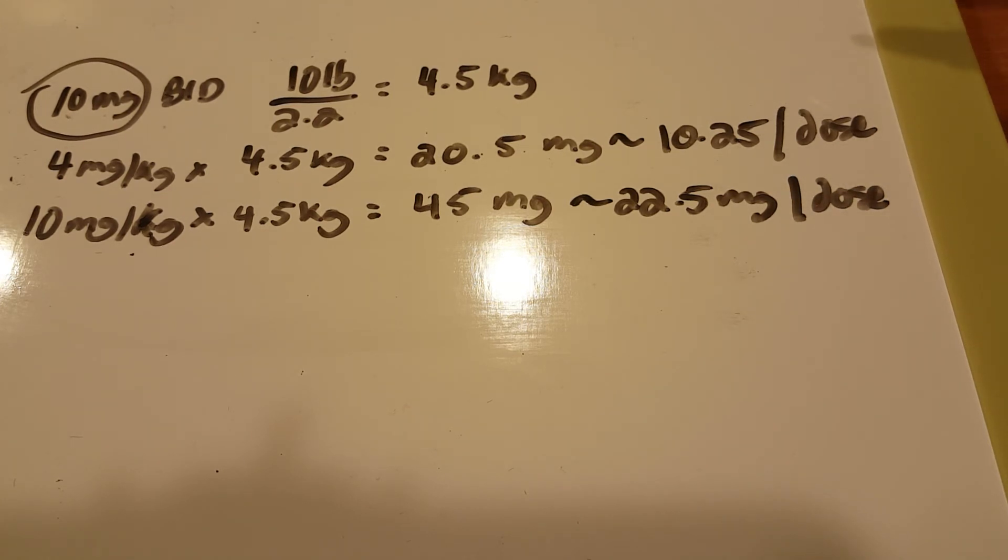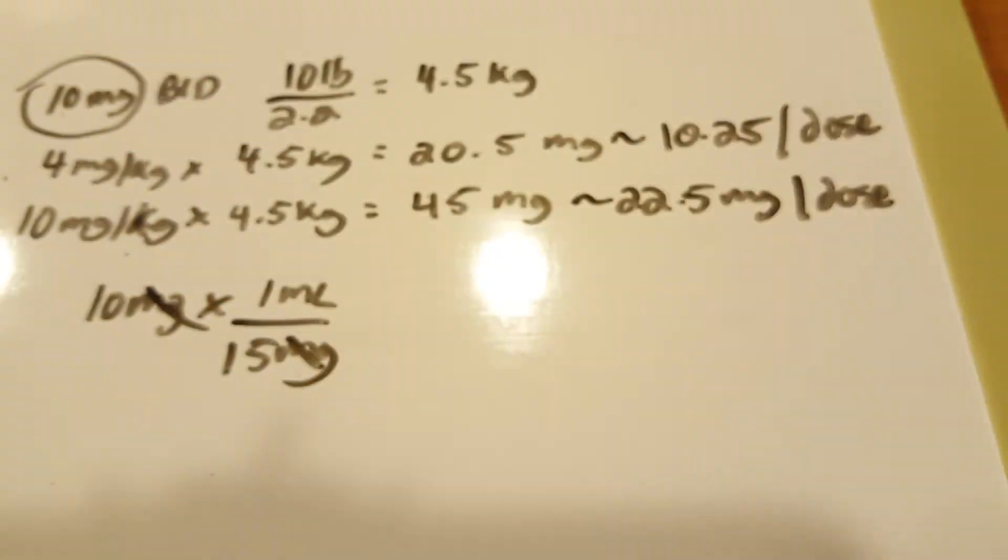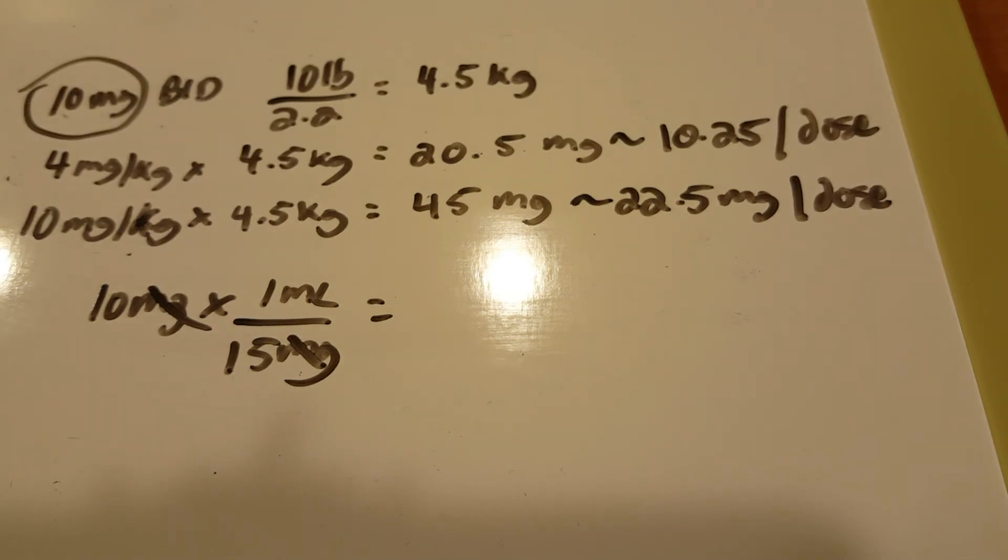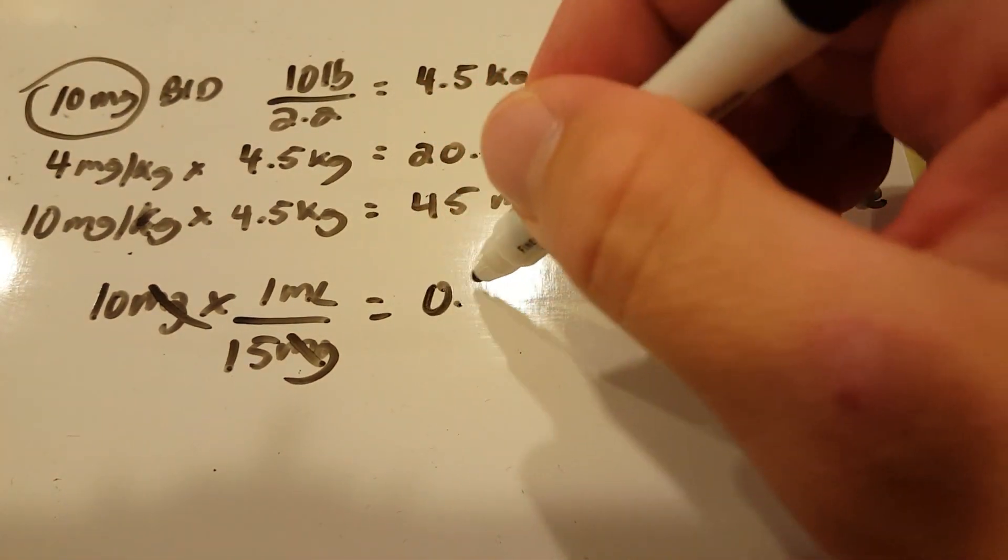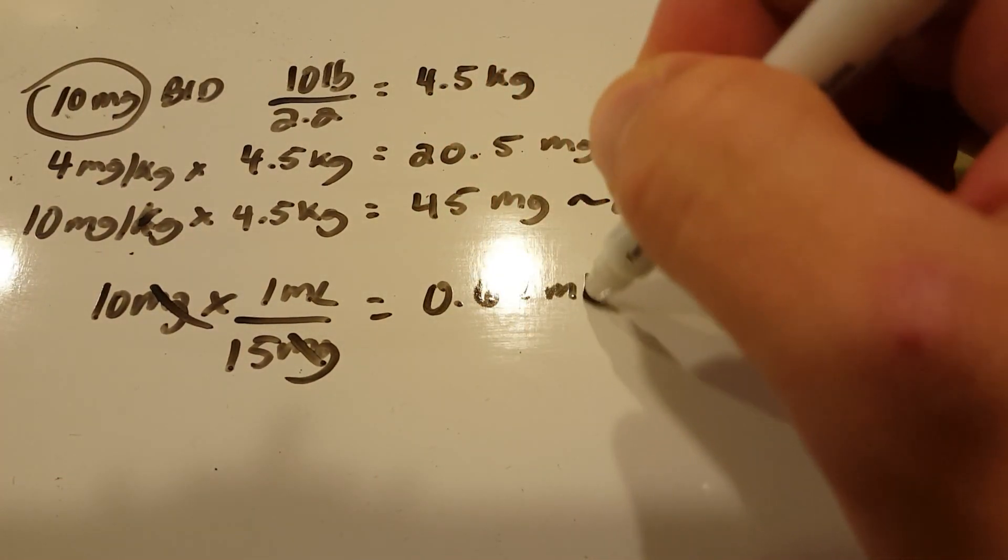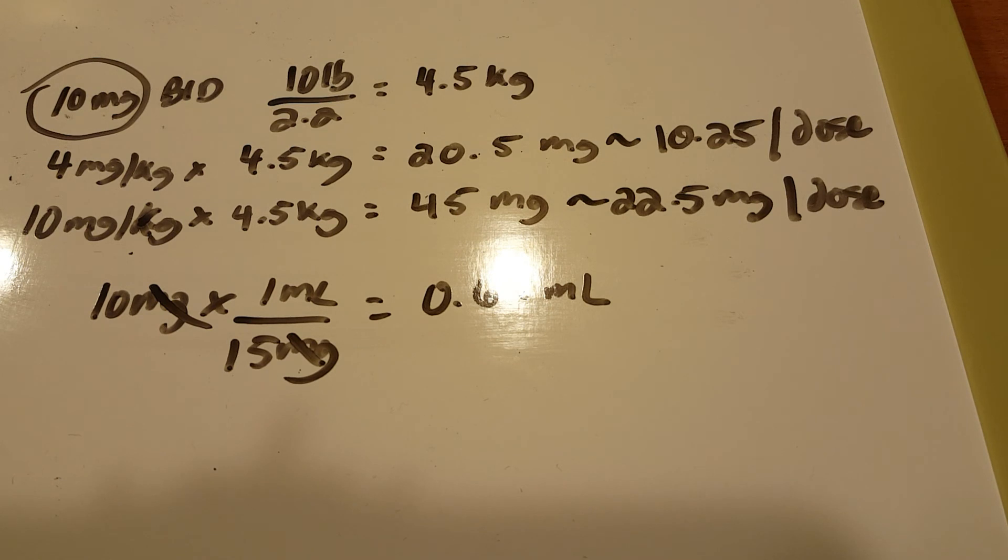We can still calculate the milliliters of this. I would take the 10 milligrams that was ordered times 1 milliliter per 15 milligrams. We can cross those out, and we are left with 10 divided by 15, which is 0.67 milliliters. So 0.67 milliliters would be the dose for the Zantac.